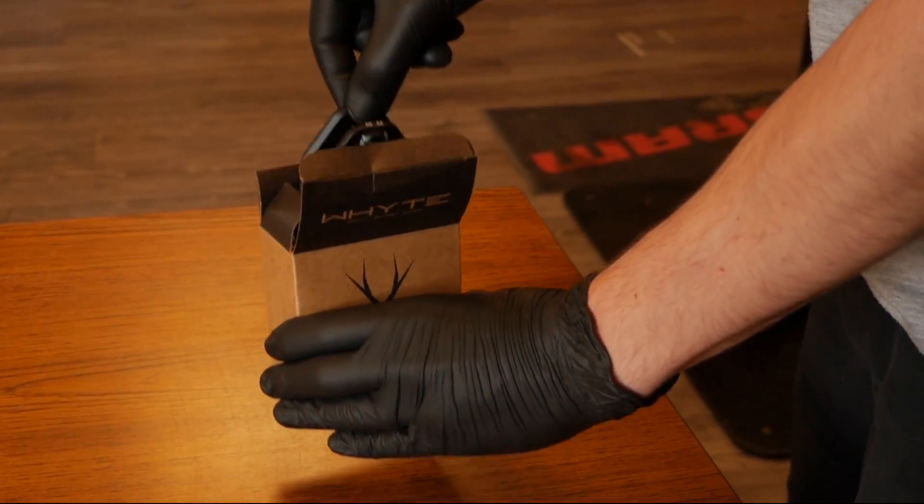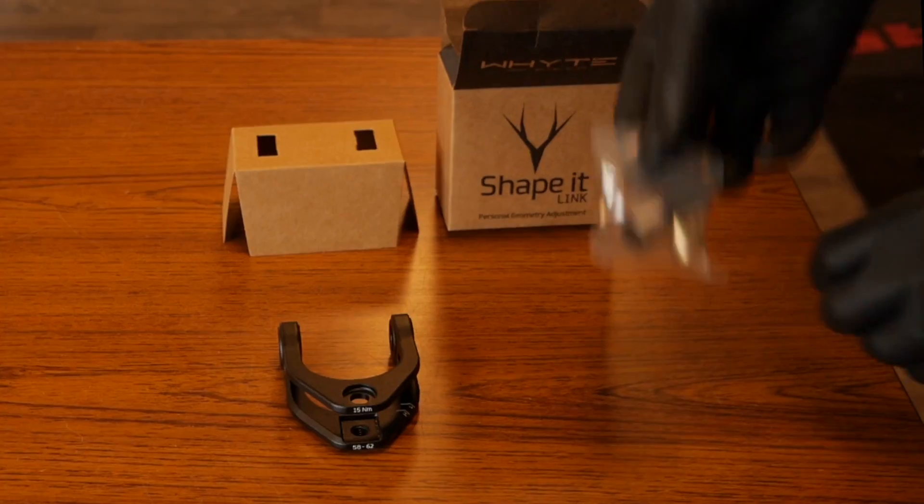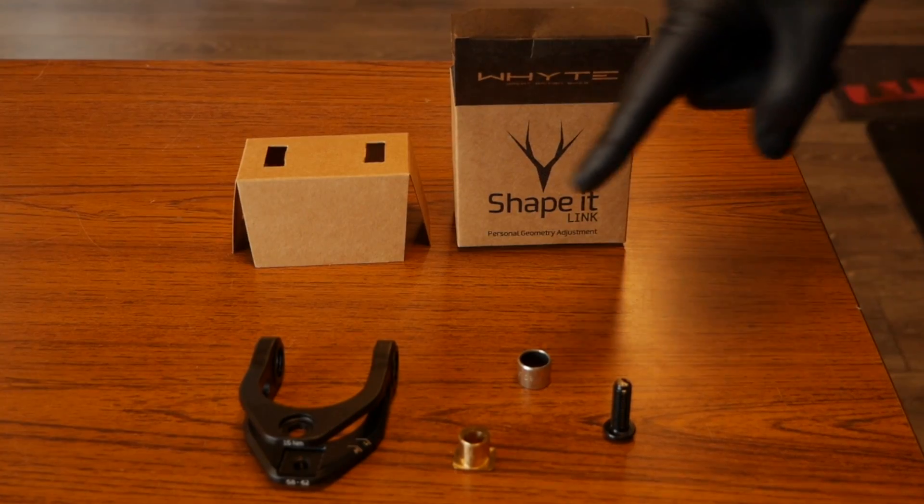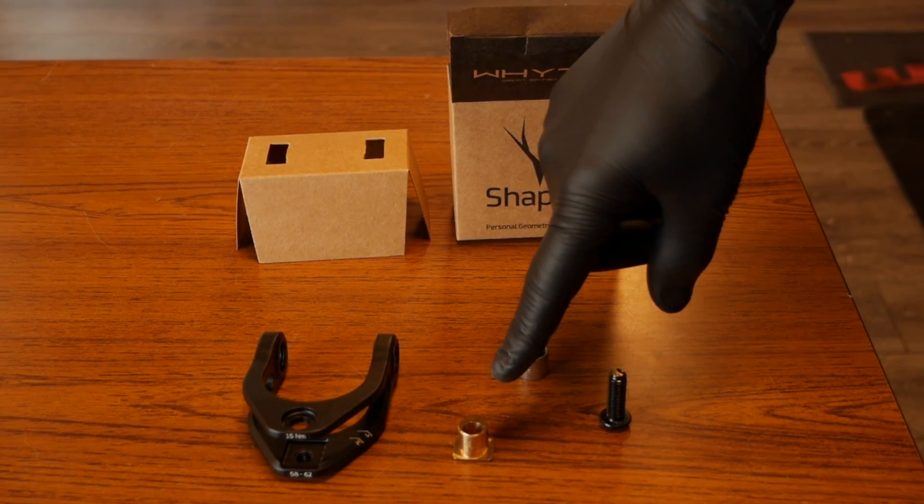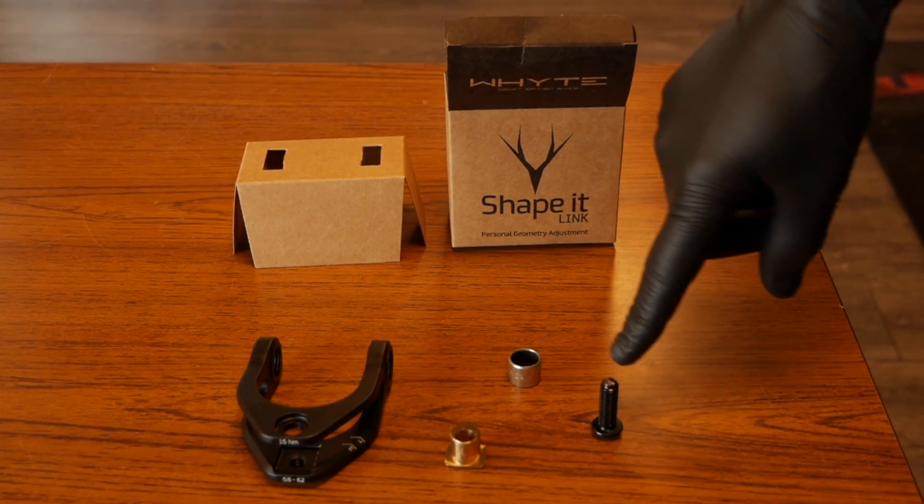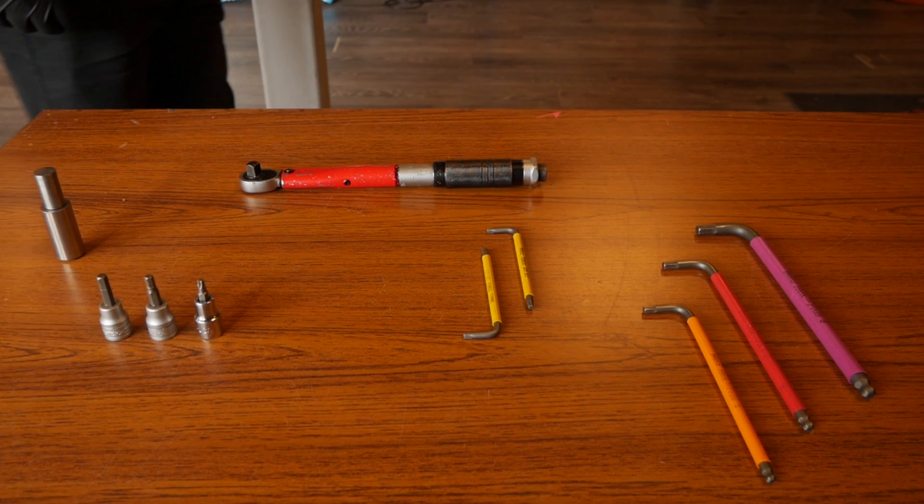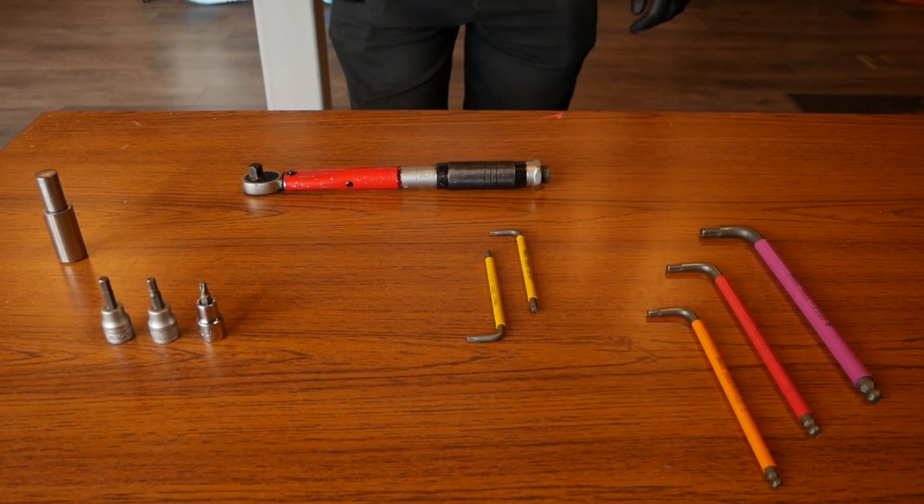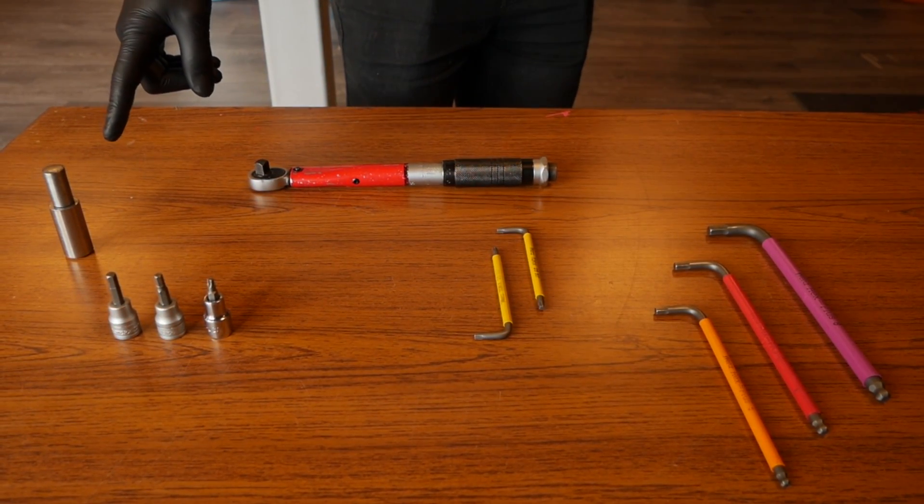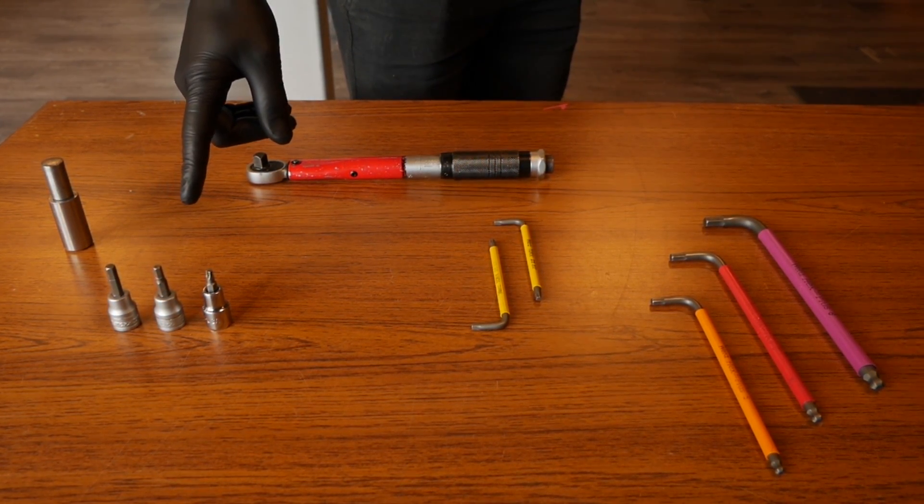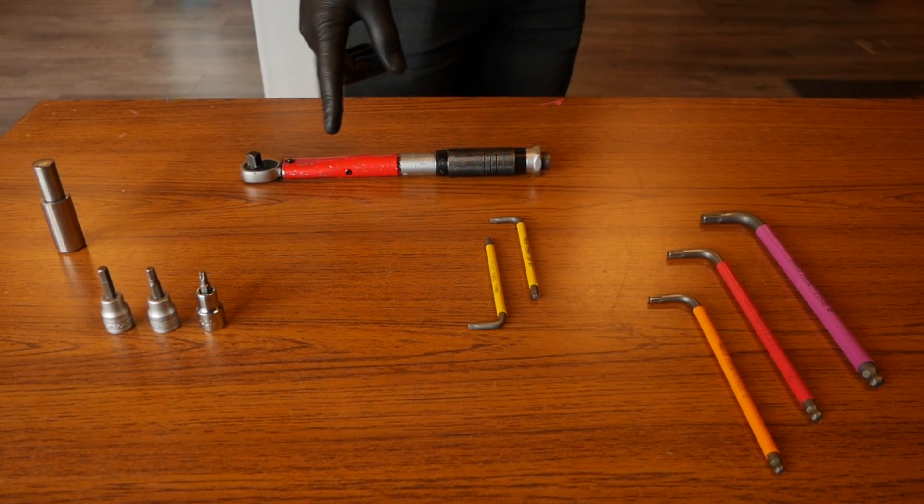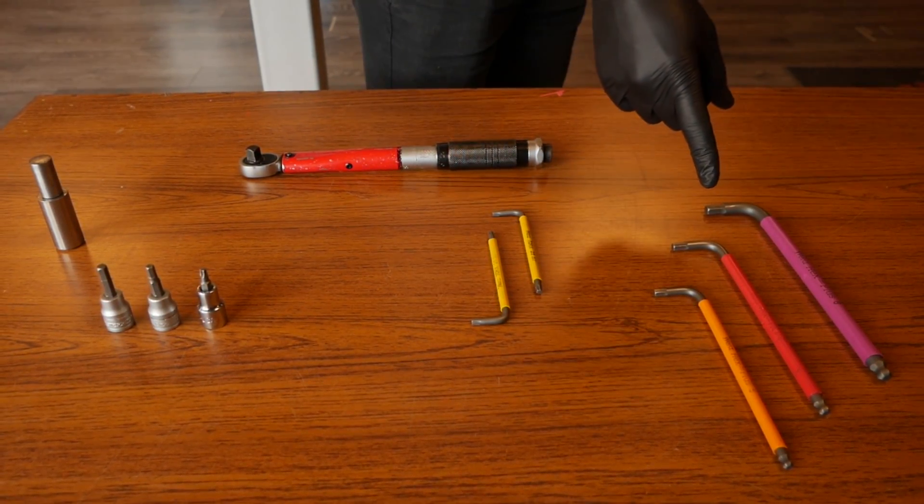To start, make sure you have all the required parts. This includes the link, offset brass bushing, DU bush, and the fixing bolt. Then check the tools required: a DU bush press, 8mm, 6mm, and T25 bit, a torque wrench, and an allen key torque set.